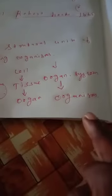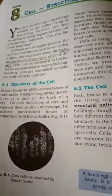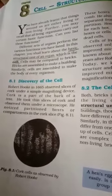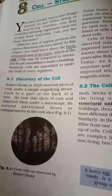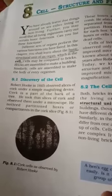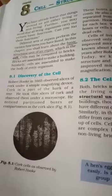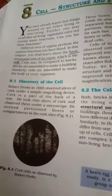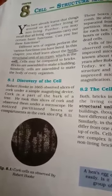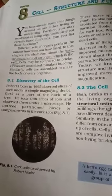Robert Hooke discovered the cell in 1665. He observed cells from a thin slice of cork under a simple magnifying device. Cork is a part of the bark of trees. He took a thin slice of cork and observed it under a microscope.